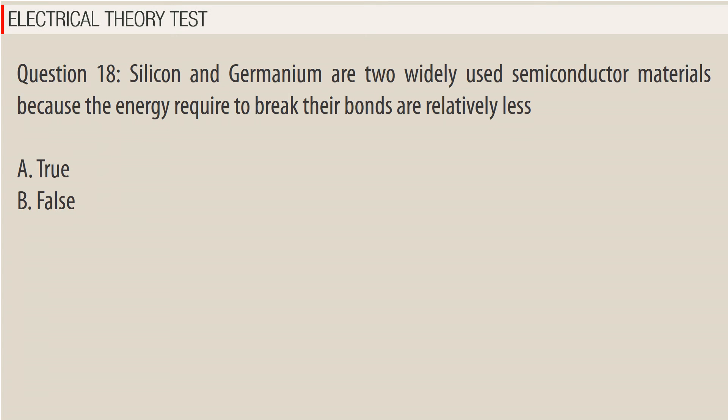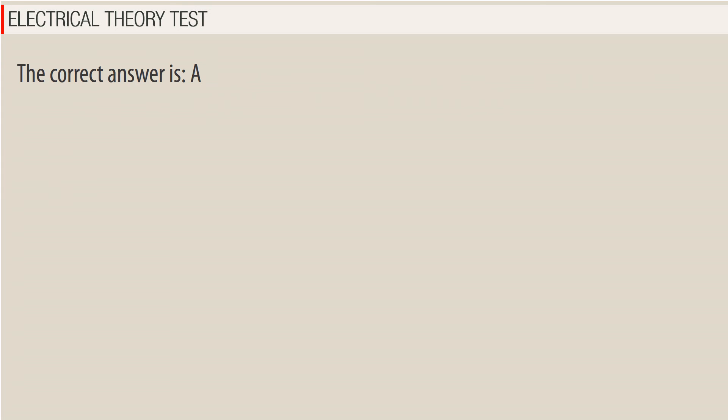Question 18. Silicon and germanium are two widely used semiconductor materials because the energy required to break their bonds is relatively less. A. True. B. False. The correct answer is A — True.